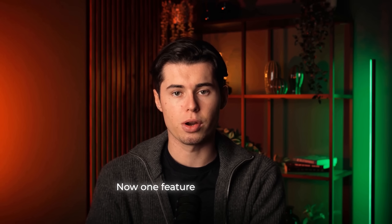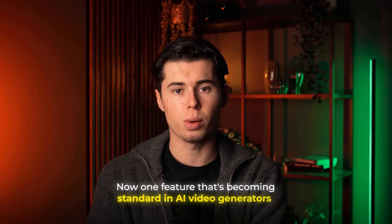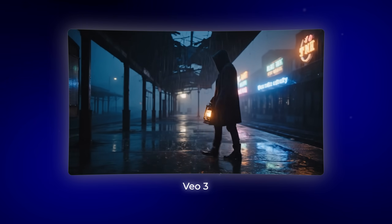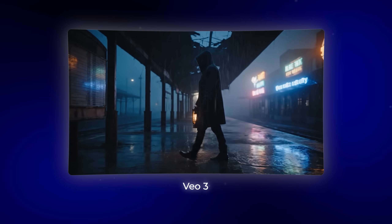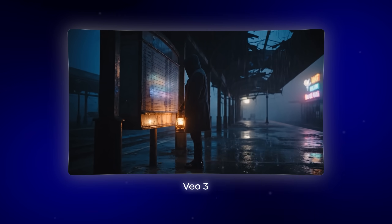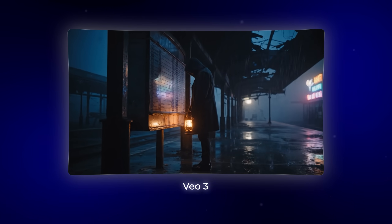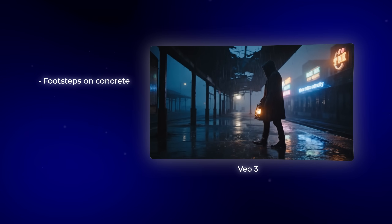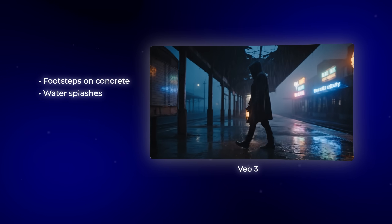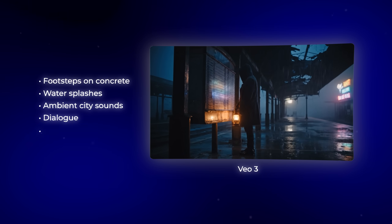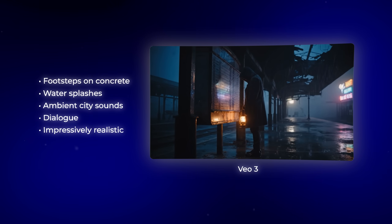Now, one feature that's becoming standard in AI video generators is automatic sound generation. Google VO3 is amazing at this. When you generate videos, it automatically adds background sound effects that match the action. You'll hear footsteps on concrete, water splashes, even ambient city sounds and dialogue. It's impressively realistic.